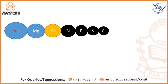You can see in this slide that when we move from left to right, the electronegativity values are: sodium 0.93, magnesium 1.31, aluminium 1.81, silicon 2.02, phosphorus 2.19, sulfur 2.58, and chlorine 3.16. Argon is not mentioned because it does not form any bond.